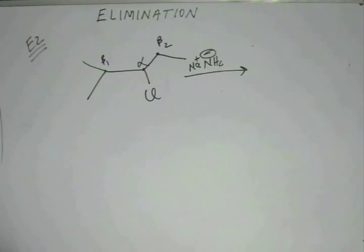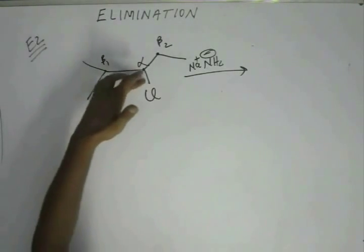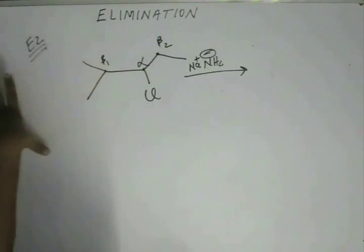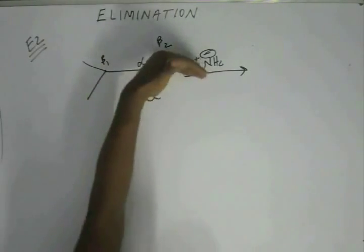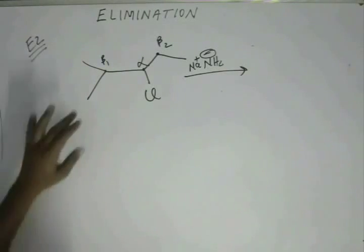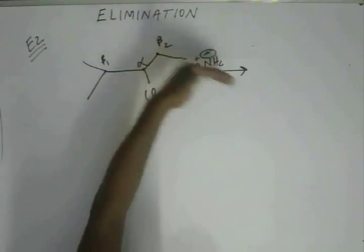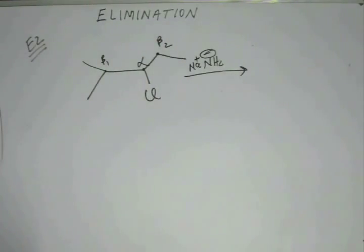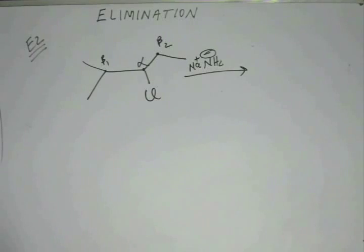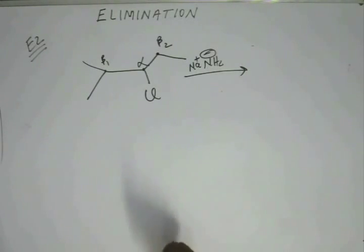When you have a more substituted alkene, this seems to be more substituted because you have two groups on one side and a bulkier group on the other side. If the alkene is on the other position, there will be only one group on each side — that seems to be less substituted. When you have a more substituted alkene, you will also have more alpha hydrogens, which accounts for more hyperconjugation and greater stability. So this becomes a general rule of thumb.